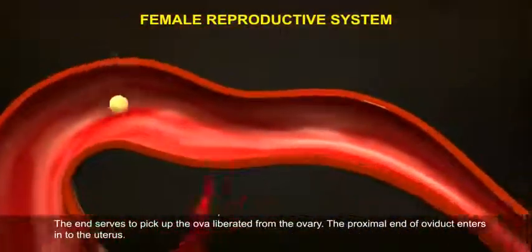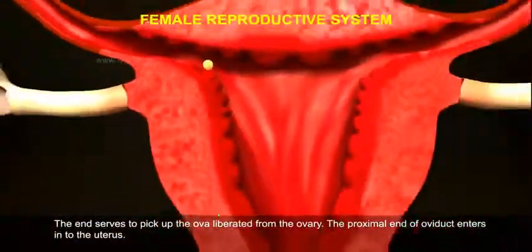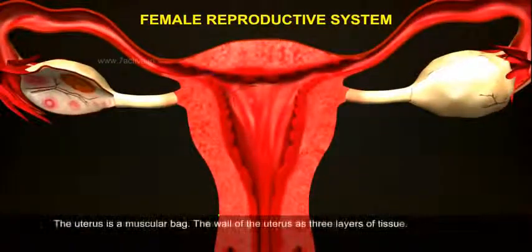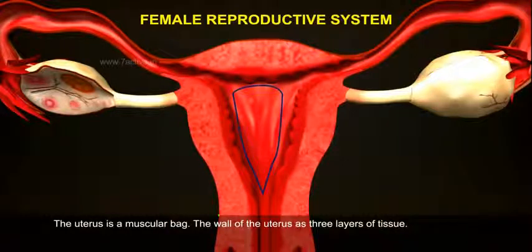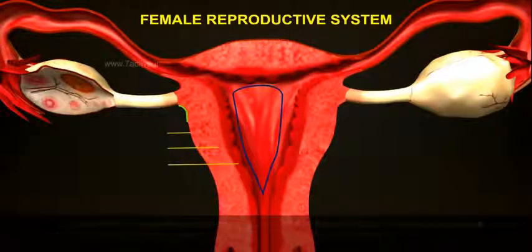The proximal end of the oviduct enters into the uterus. The uterus is a muscular bag, and its wall has three layers of tissue.